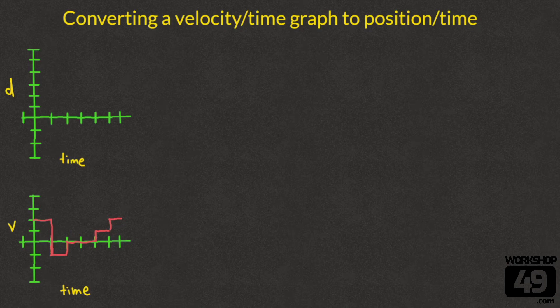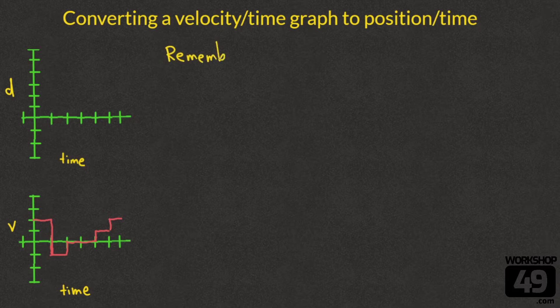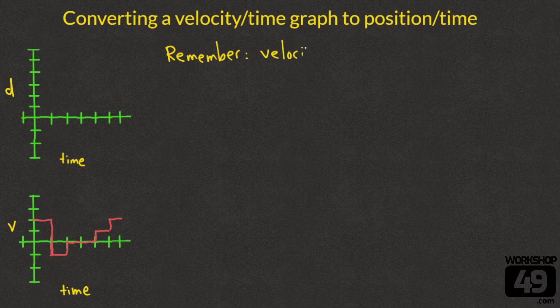Hey everyone! In this video we're going to be converting a velocity time graph to a position time graph. This will be the reverse of our last video. We have a velocity time graph drawn below and we're going to draw the matching position time graph up above, which is labeled d for our distance or displacement in time.